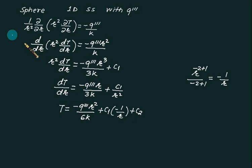So again we observed that the temperature is directly proportional to minus of R square. It indicates a downward parabola. So in all generation problems you always get a temperature distribution as a downward parabola.